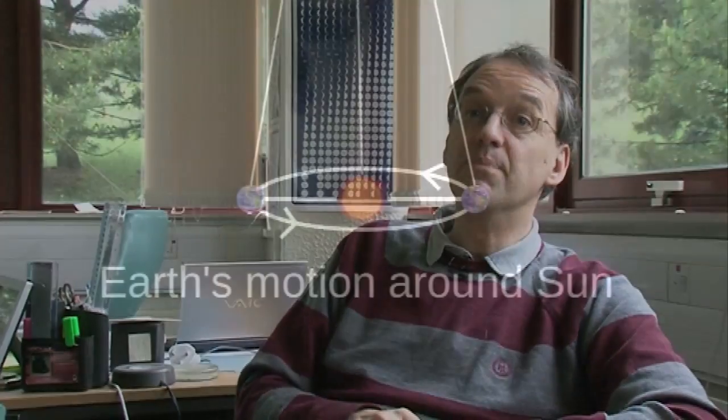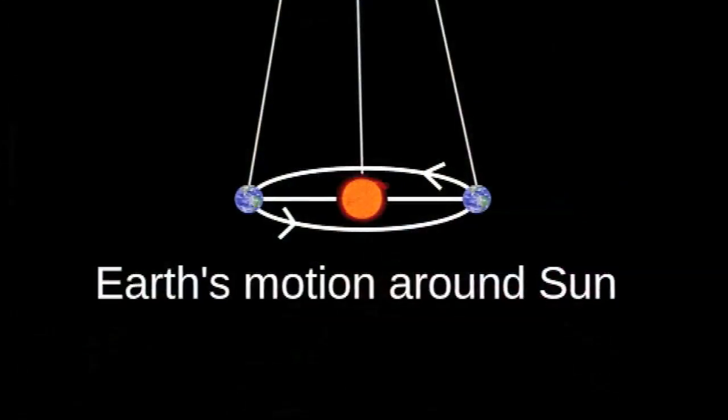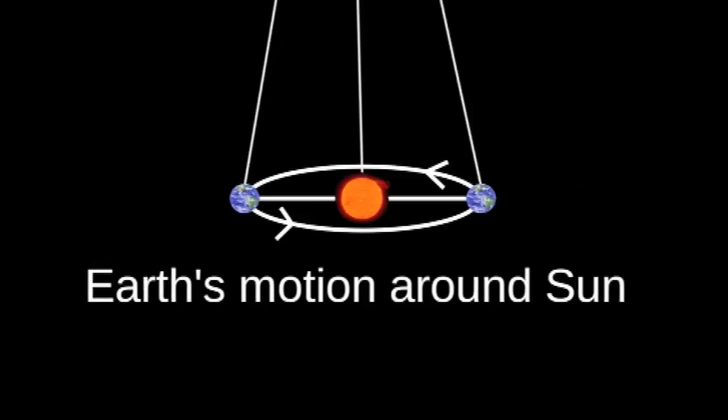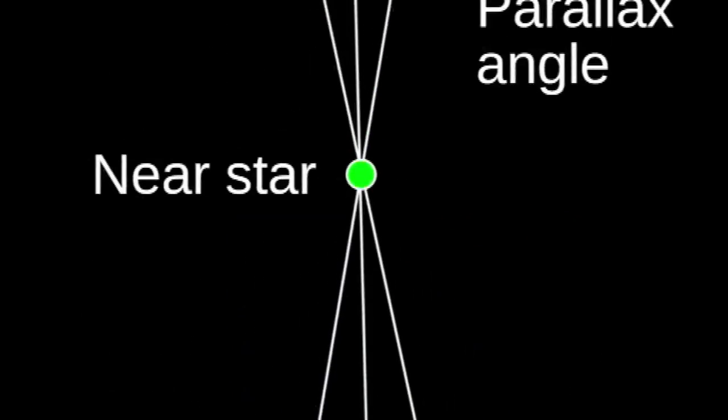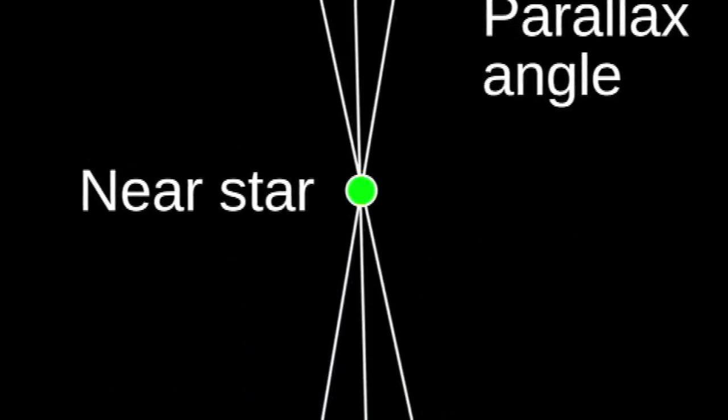What you need is to observe an astronomical object from two points which are a long way apart. In astronomy we can do better than two observatories on Earth — all you have to do is take a picture, then wait six months. Of course the Earth goes around the Sun, and then you take another picture, and you've moved your baseline by a large amount — by twice the distance between the Earth and the Sun.